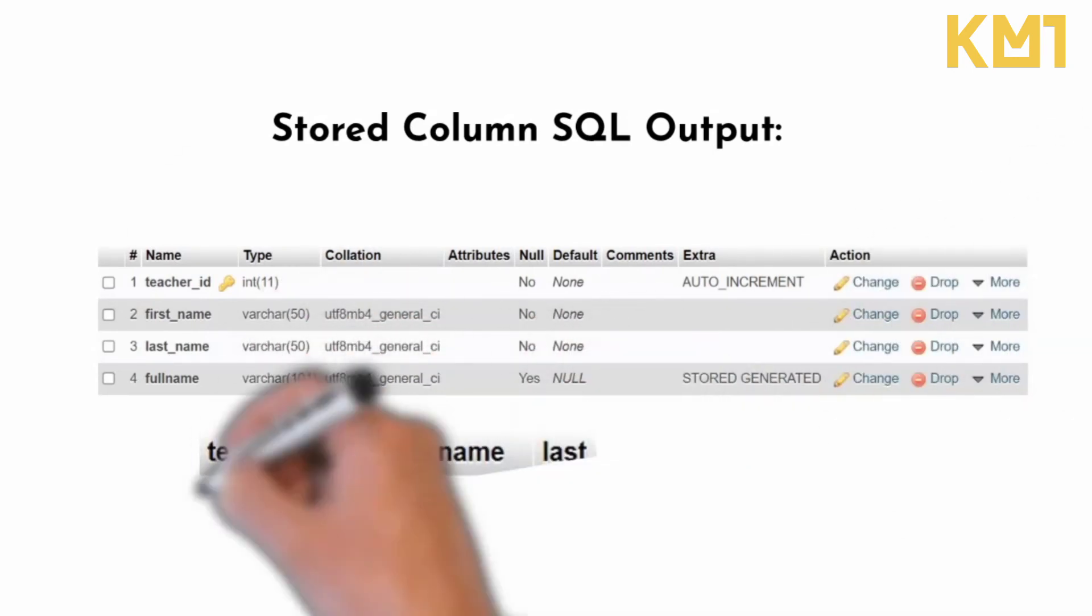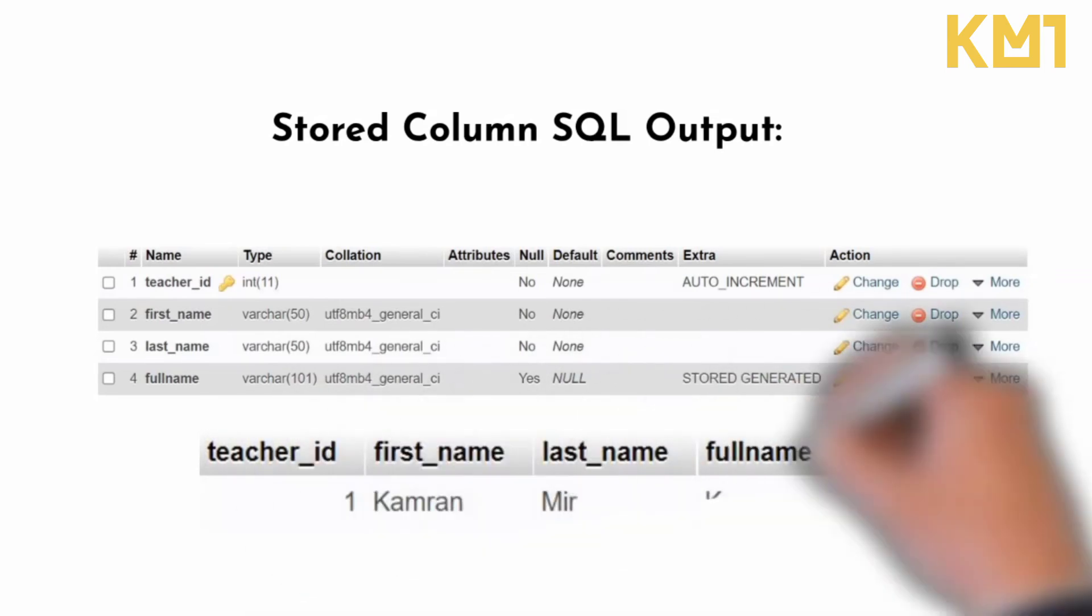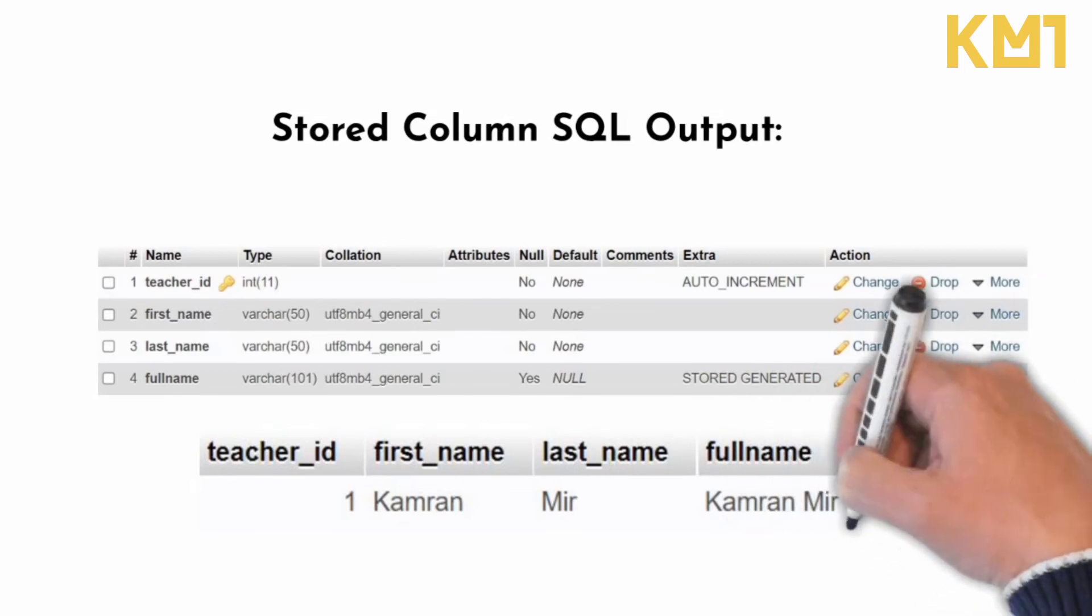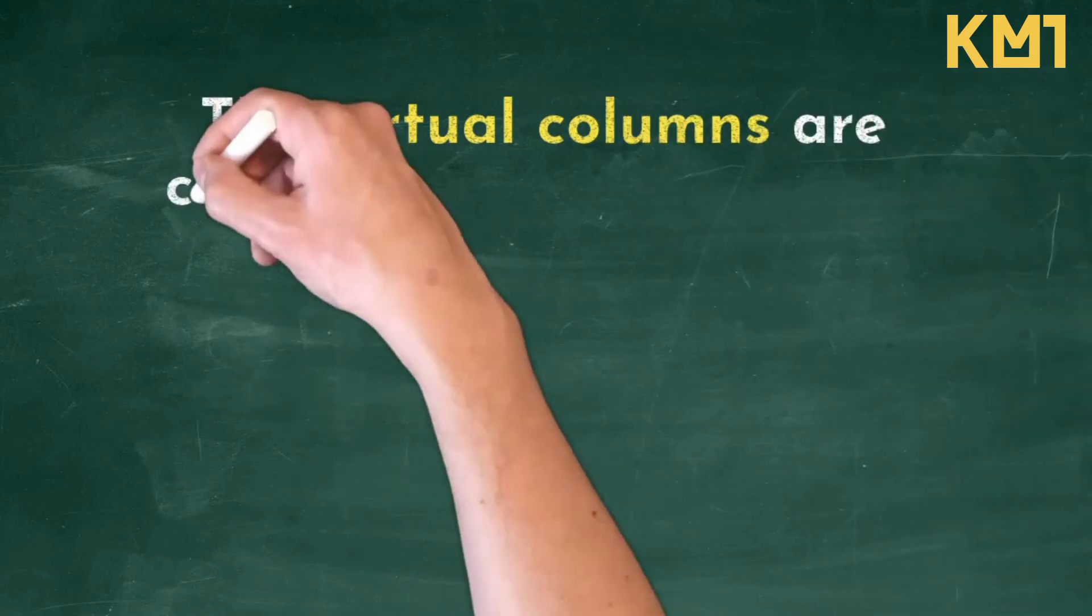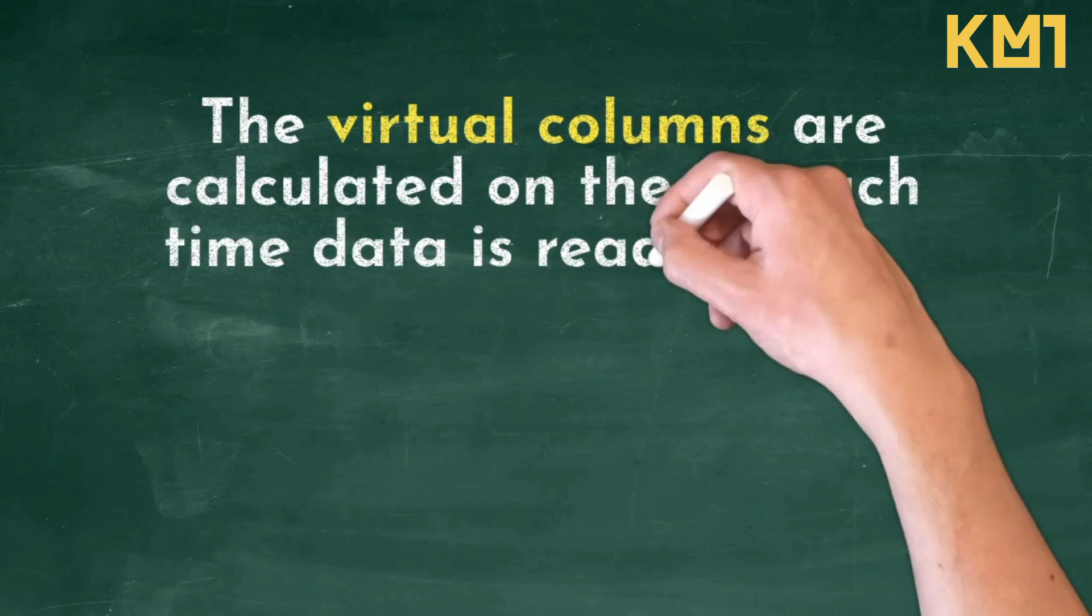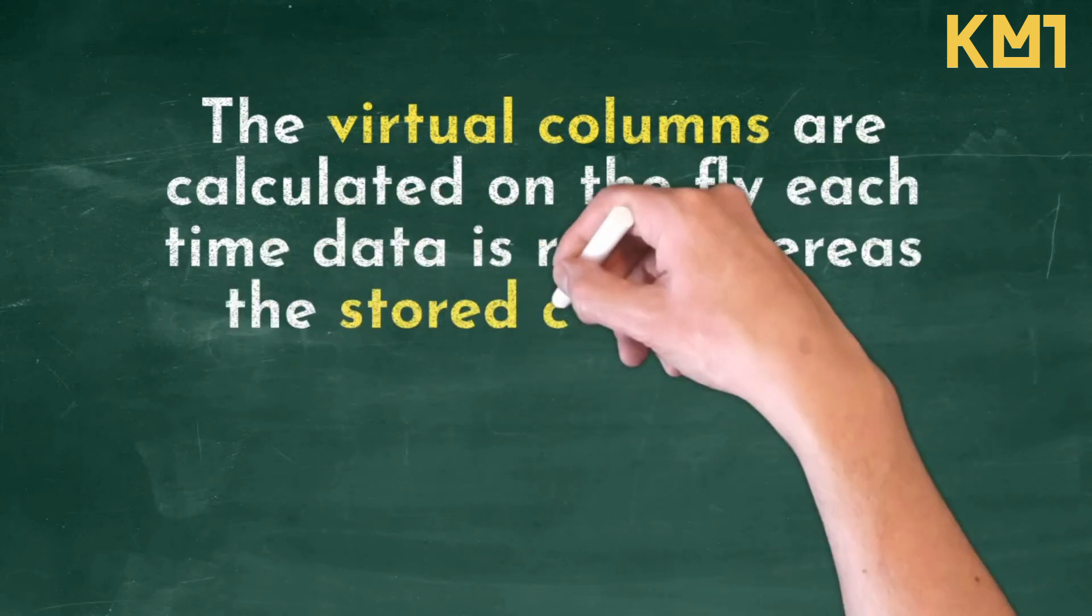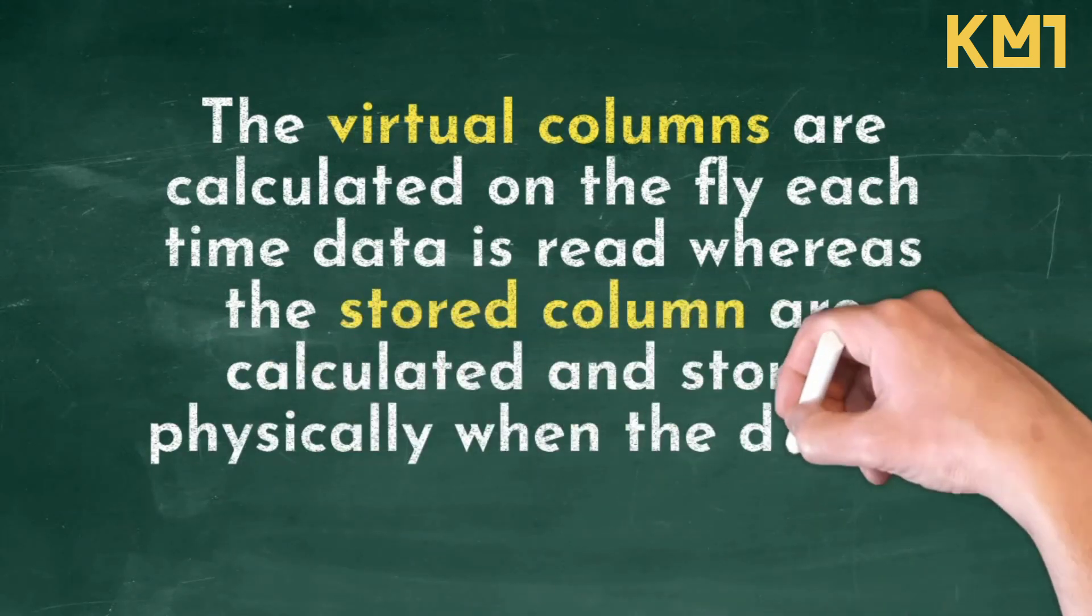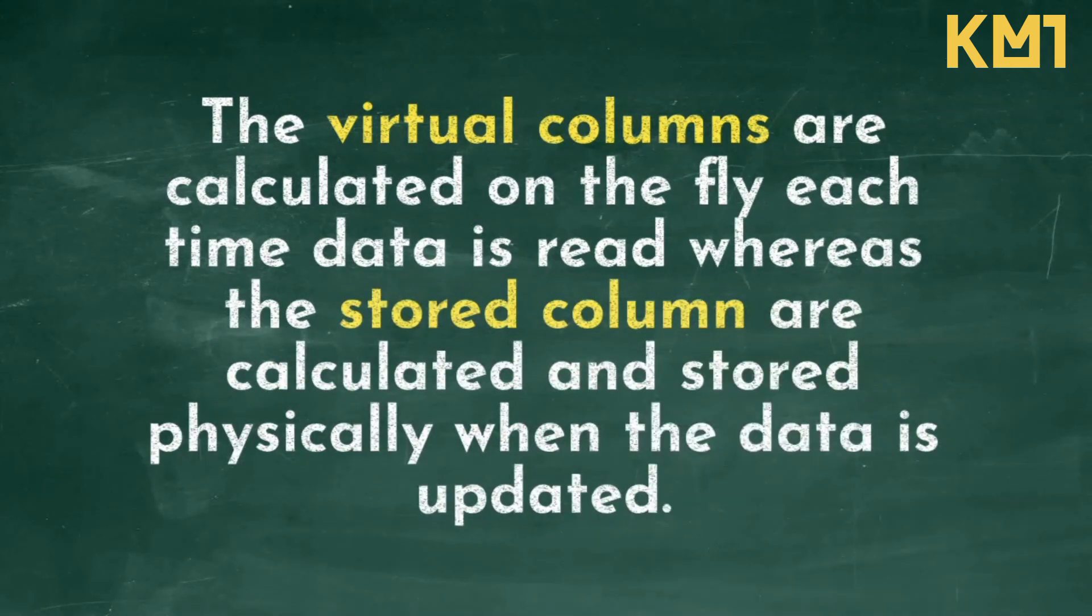As this generated stored column is concatenating the first_name and last_name, apparently the output will be the same for both the virtual and the stored column. But we need to understand: the virtual columns are calculated on the fly each time data is read, whereas the stored columns are calculated and stored physically when the data is updated. This is the main difference. Thank you.